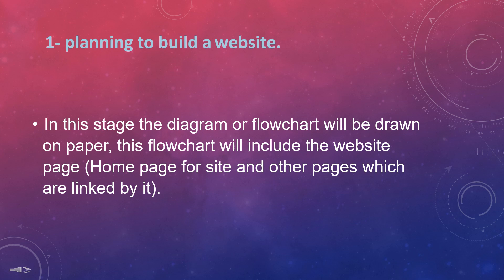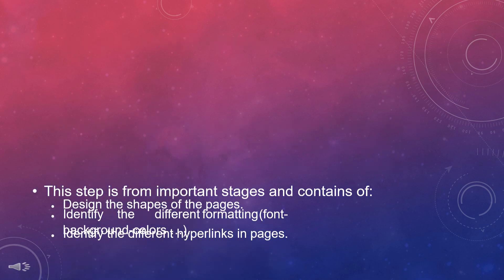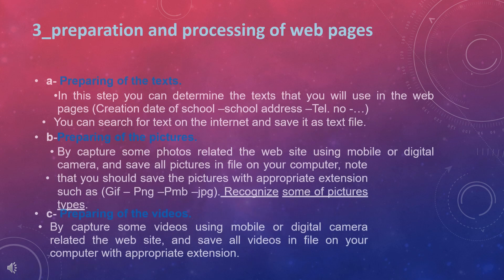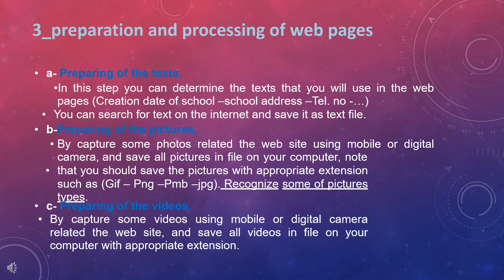Stage one — planning to build a website: in this stage, a diagram or flowchart will be drawn on paper. This flowchart will include the website's home page and other pages linked to it. Stage two — designing of web pages: this is one of the important stages and involves designing the shapes of the pages, identifying formatting, fonts, and background colors, and identifying the different hyperlinks and pages.